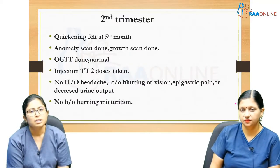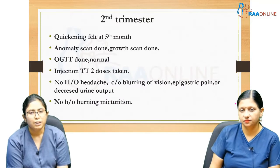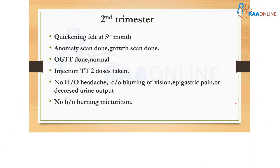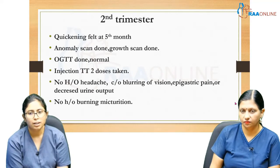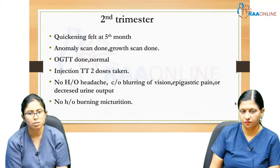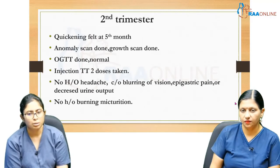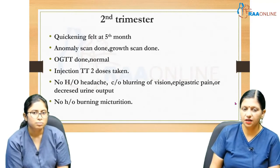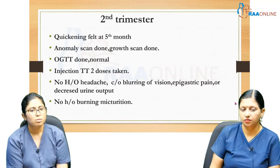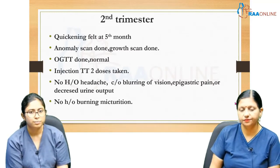Second trimester: quickening felt at fifth month. Anomaly scan and growth scan done. OGTT done and within normal limits. Injection TT, two doses taken. No history of headache, blurring of vision, epigastric pain, or decreased output in the second trimester. OGTT stands for Oral Glucose Tolerance Test.